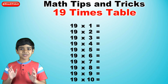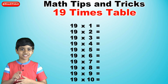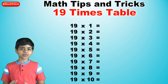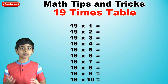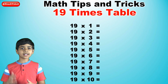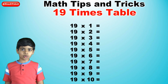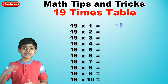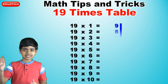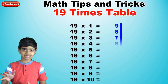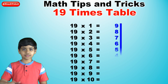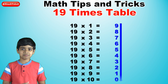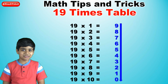So next, for the ones digits — this is the trick. We just write all of the numbers from 9 to 0 in descending order. So: 9, 8, 7, 6, 5, 4, 3, 2, 1, and 0.